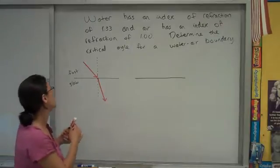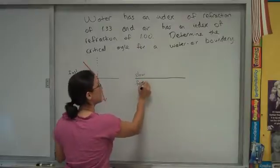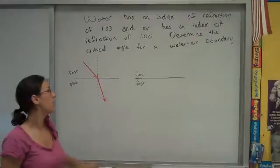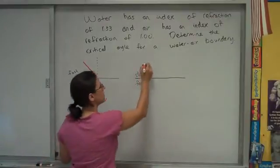That's not the case if you send it from something slow into something fast. Let's make this first material a slow material, the high index value material, and the second material a fast material. So light travels slower in this.